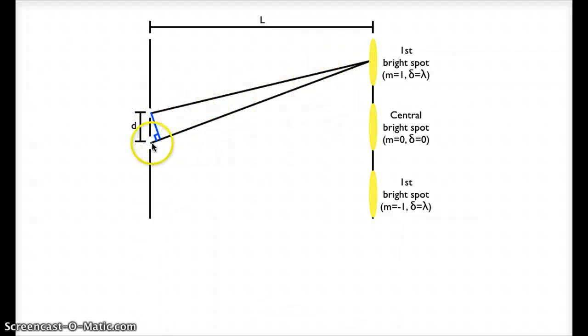Which means this little side of this triangle, this bottom piece, that's my path length difference. That's my delta right there. If I call this angle here at the top of the triangle theta, then I can say sine theta equals delta over d. This is the equation you saw in the previous slide.